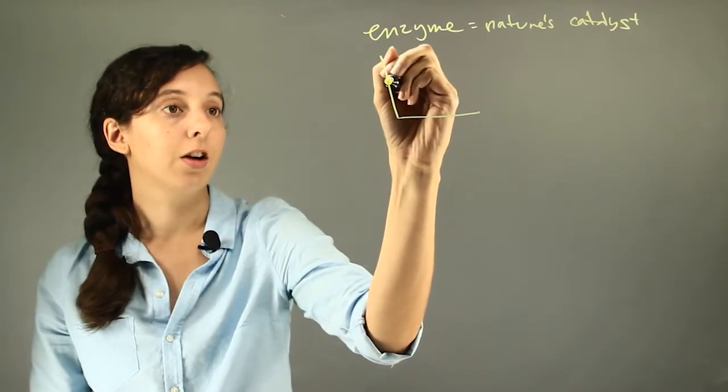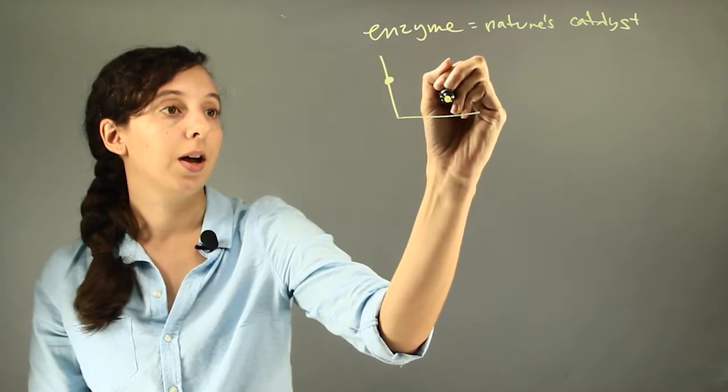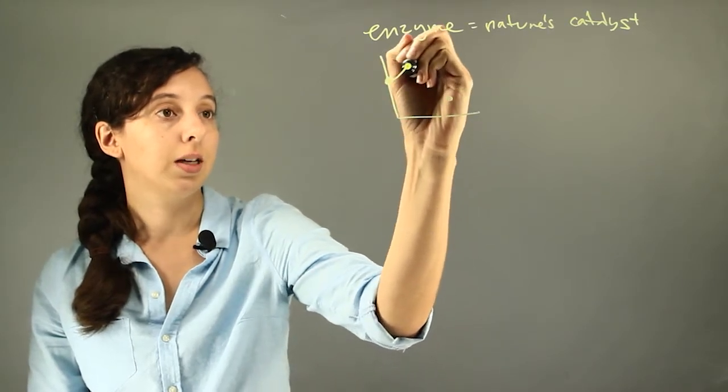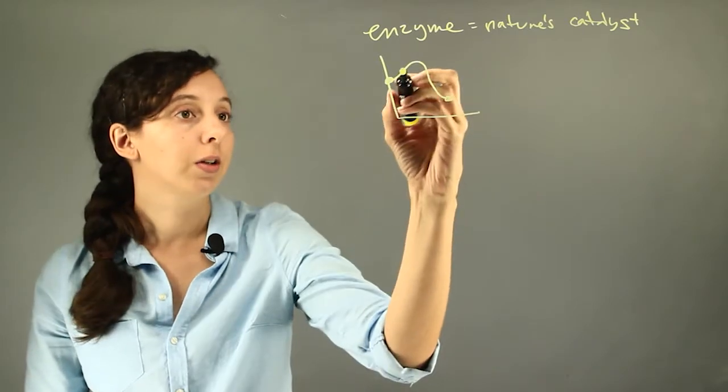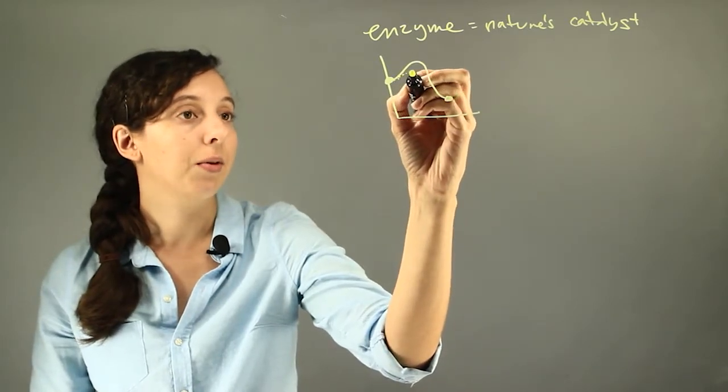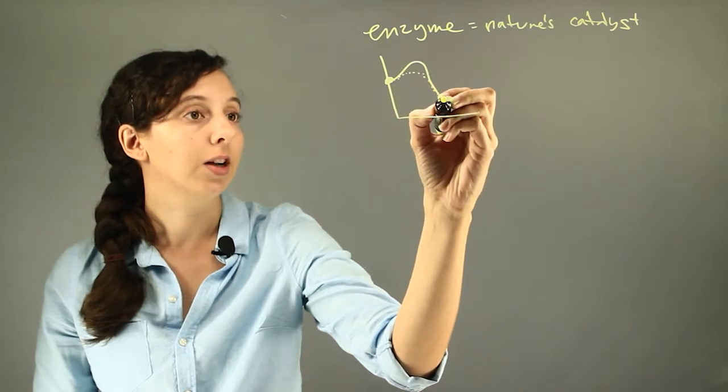Let's say we have our reactants, we want to go to our products, there's always going to be an activation energy. We can lower the activation energy by creating a different pathway of making this reaction happen.